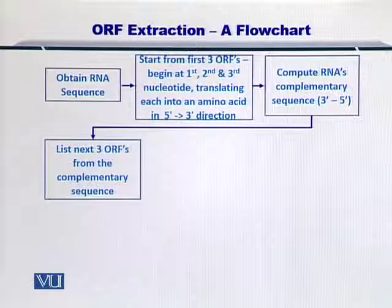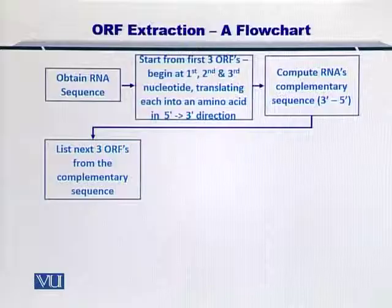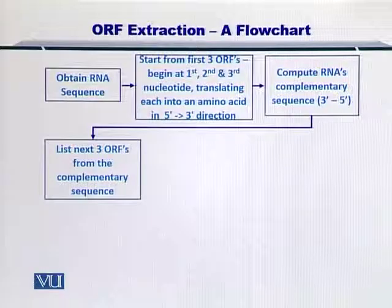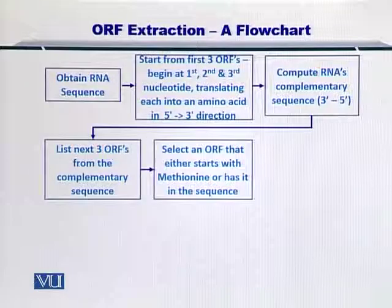Then you list the three ORFs for the complementary sequence as well. So first you have three ORFs from the forward strand, and now you're adding three ORFs additionally — in all there are six possible ORFs, and that is very important to remember.